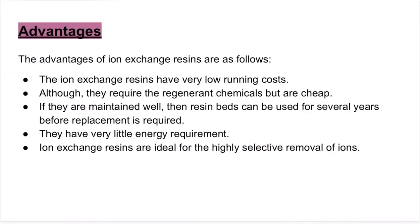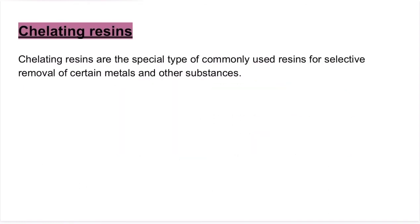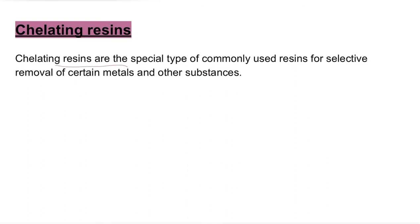Next we have the advantages of ion exchange resins. First, they have very low running cost — they are cheap, although they require regeneration chemicals, but if maintained well, resin beds can be used for several years before replacement is required. They have very little energy requirement. Ion exchange resins are ideal for highly selective removal of ions. One more term in our topic is chelating resins — these are a special type of commonly used resin for selective removal of certain metals and other substances.